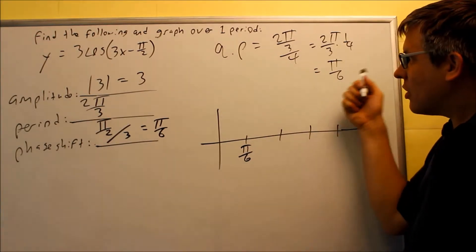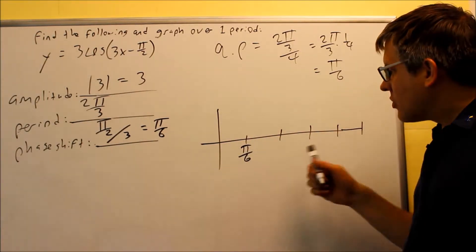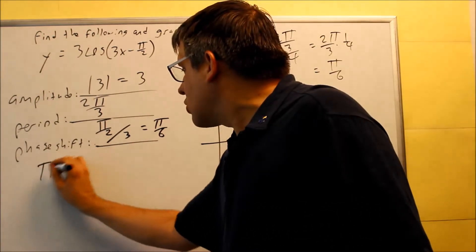Now it's coincidence that the quarter point is the same as the phase shift. That's not always going to happen that way. So if I want to find out how to get from here to here, what I need to do is I'm starting with my phase shift, π over 6,